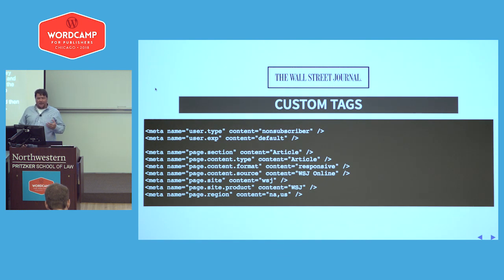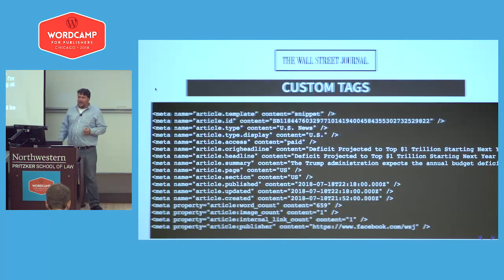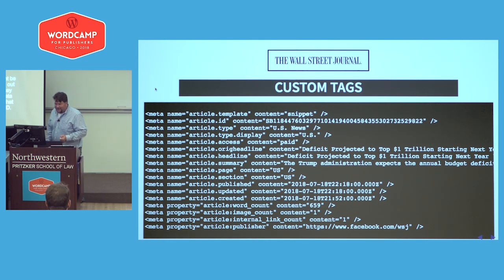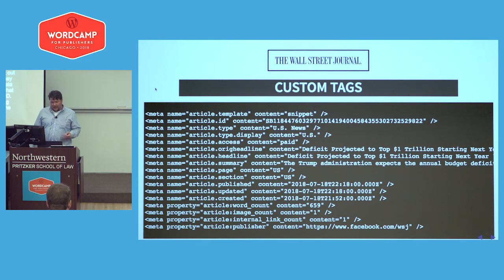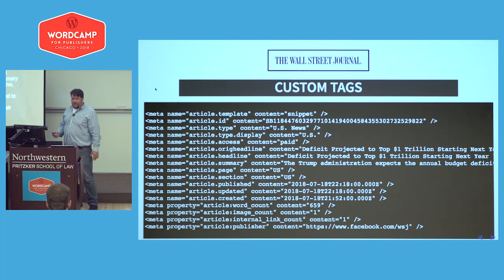The WSJ also has advertising and personalization tags — CXense appears to be a proprietary content personalization and advertising service they run. Then even more custom tags: they're defining users (I'm a non-subscriber), page sections for potential syndication, and detailed article metadata — template, ID, article type, headline, original vs. updated headline, summary, publish time, and word count. Basically everything they need to know about the article, possibly consumed by their search engine, subscription service, advertisers, or analytics program.